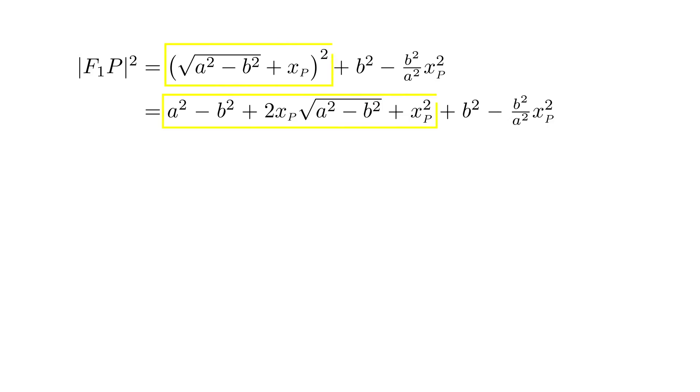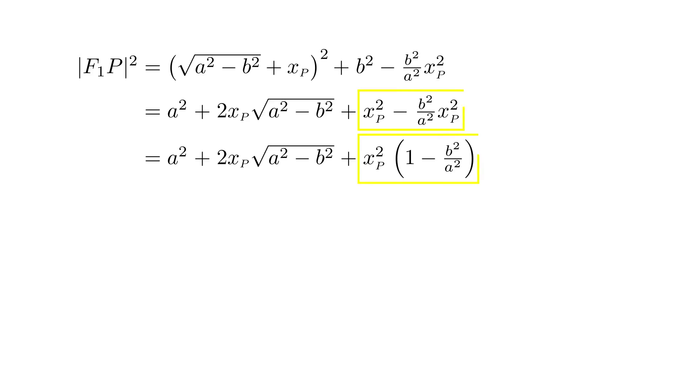Now we'll transform this expression to a more convenient form. First, we square what's inside the parenthesis. We have minus b squared and plus b squared so they cancel out. In the next step we take out the common factor xP squared in front of the parenthesis. Then we divide and multiply by a the middle term. And for the expression inside parenthesis we put everything over a squared.